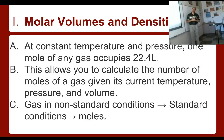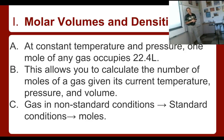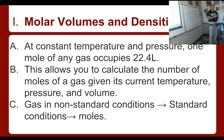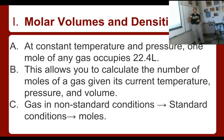Gases: molar volumes and densities. At a constant temperature and pressure, one mole of any gas occupies 22.4 liters. So you have one mole of hydrogen gas at standard temperature and pressure — one atmosphere and room temperature — that mole takes up 22.4 liters. A mole of oxygen gas also takes up 22.4 liters, and a mole of carbon dioxide gas takes up 22.4 liters.